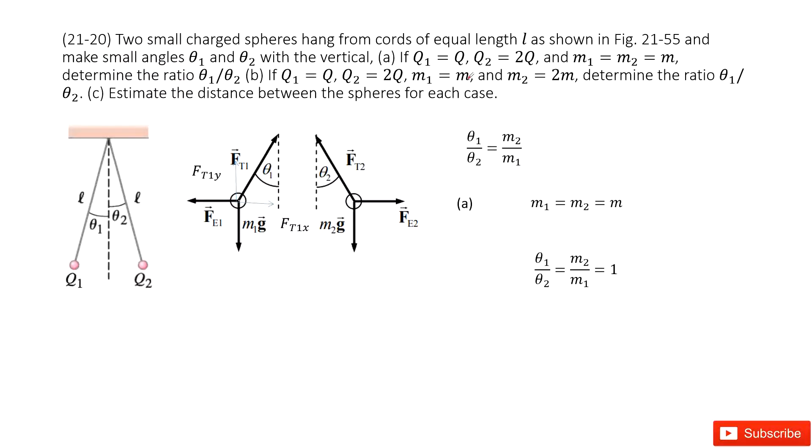Now you can see for the first case, it tells you m1 equals m2 equals m, so this ratio becomes 1. In the second case, it tells you m2 equals 2m and m1 equals m, so you can see this ratio equals 2. Thank you.